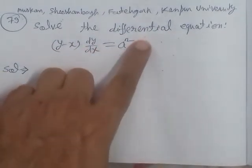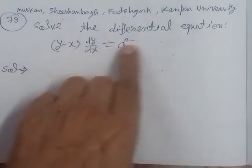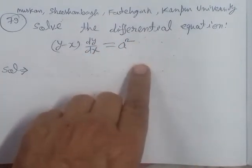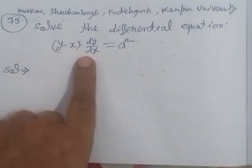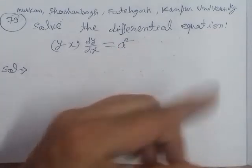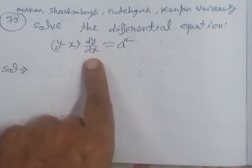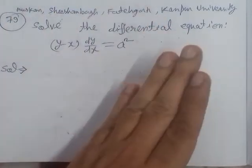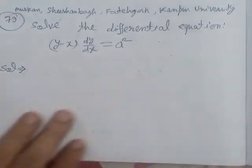We can apply a method where we swap dx and dy here, so the right hand side becomes dx upon dy. With a square, both terms divide, and x becomes the dependent variable and y the independent variable. We can make a linear differential equation, find an integrating factor, and solve — but we can use a shortcut method instead.